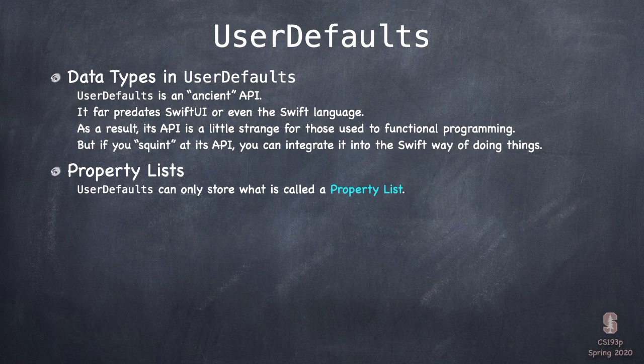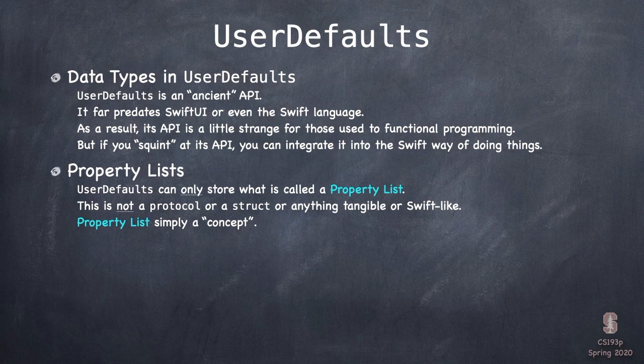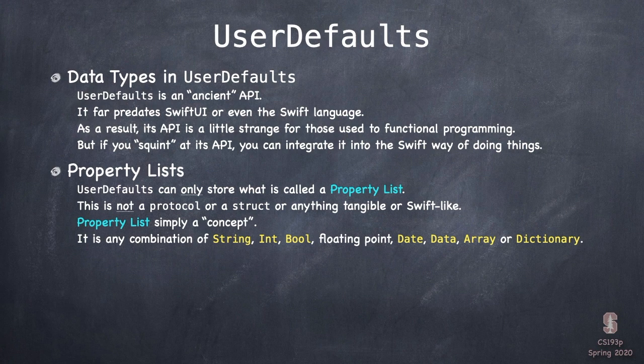The data stored in UserDefaults is called a PropertyList. A PropertyList is not a protocol or a struct — it's really just a concept. That idea is that it's any combination of strings, ints, bools, floating point numbers like float or double, dates, datas which are bags of bits, arrays and dictionaries.